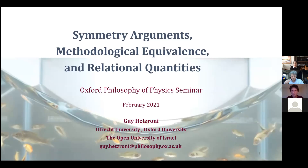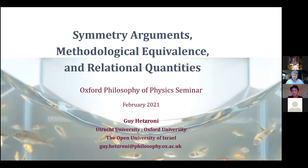The project I'm going to describe started when I was thinking about the Aharonov-Bohm effect and trying to find more ways to think about its ontology. I came across Carlo Rovelli's paper 'Why Gauges?' and felt it had some important hints. What I'll be talking about today is not about the effect itself, but about the general relationship between symmetry arguments and interactions.